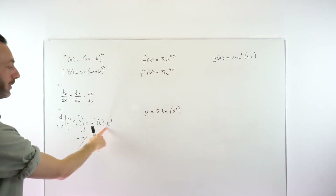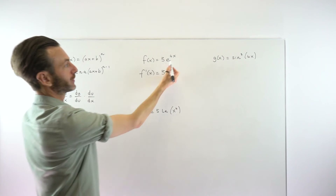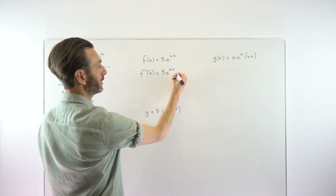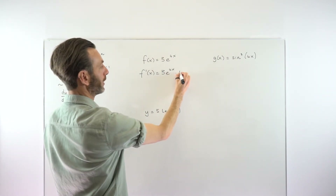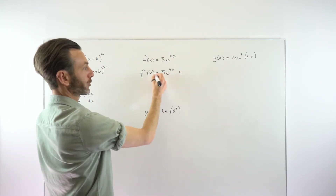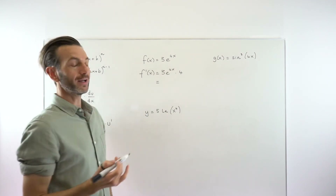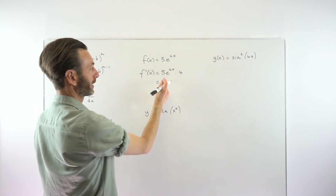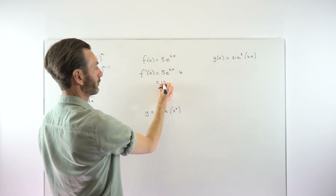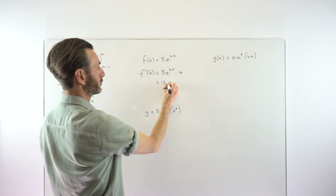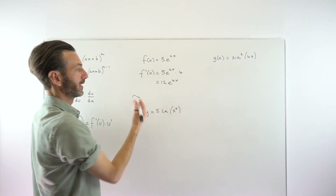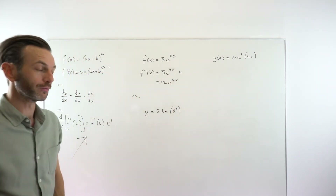We then multiply by the derivative of the internal function — the 4x part — so we multiply by 4. That is the derivative done. Again, just two derivatives multiplied together. 3 times 4 is 12, so we tidy up to 12e to the 4x. That is the derivative.